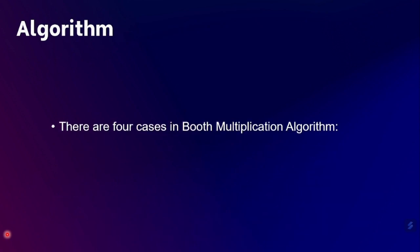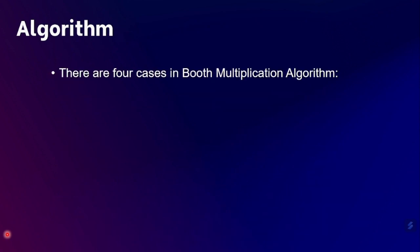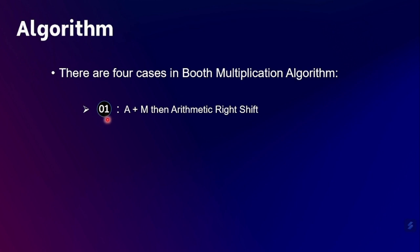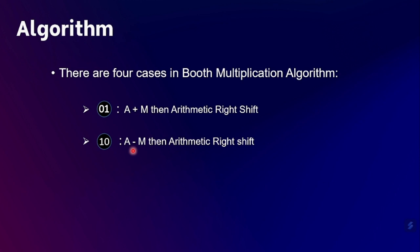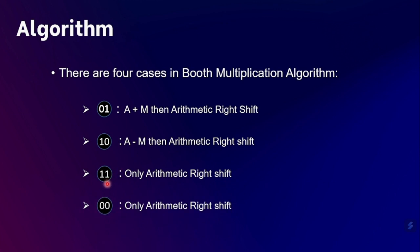Let's move to the algorithm. There are four cases in Booth's multiplication algorithm. Here zero represents the least significant bit of Q and one represents the bit of Q minus one. When we come across 0 and 1, we perform addition of A and M, then do arithmetic right shift. When we come across 1 and 0, we subtract A and M, then do arithmetic right shift. When we come across 1,1 and 0,0 we only do the arithmetic right shift.